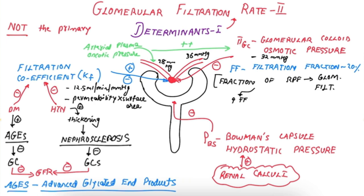If there is an increase in filtration fraction, there is an increase in glomerular colloid osmotic pressure and as a result a decrease in GFR. On the other hand, if there is a decrease in filtration fraction, there will be a decrease in glomerular colloid osmotic pressure and an increase in GFR. So filtration fraction inversely affects the GFR.